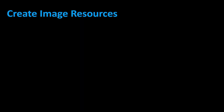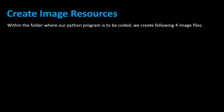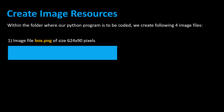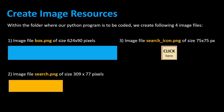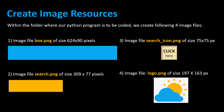Next, let's create the image resources in a folder. The folder path has to be mentioned in your program wherever needed. I am going to use the current folder — within the folder where our Python program is to be coded, we create the following four image files: box.png of size 624 by 90 pixels; search.png of size 309 by 77 pixels; search_icon.png of size 75 by 75 pixels; and logo.png of size 197 by 163 pixels.